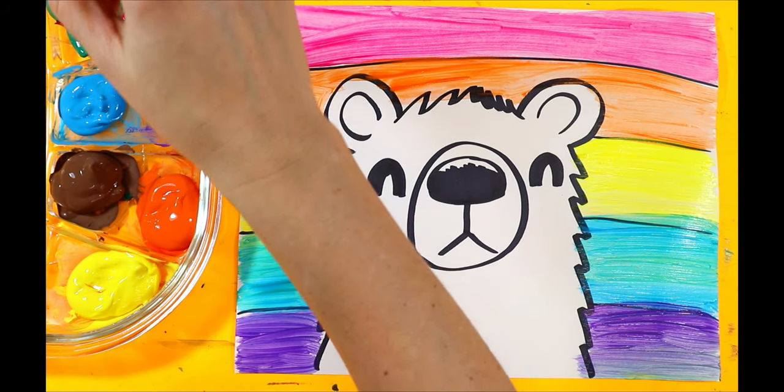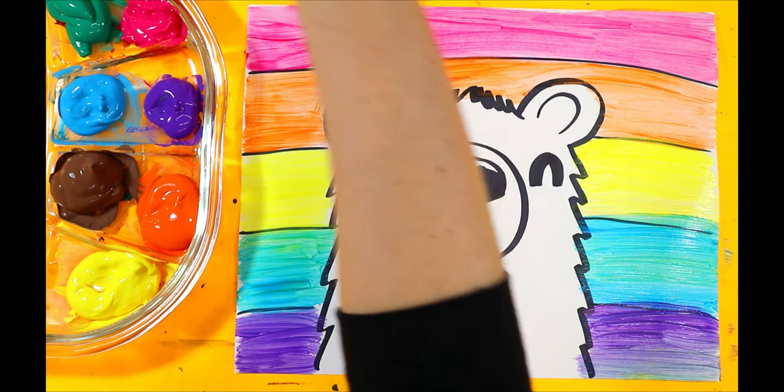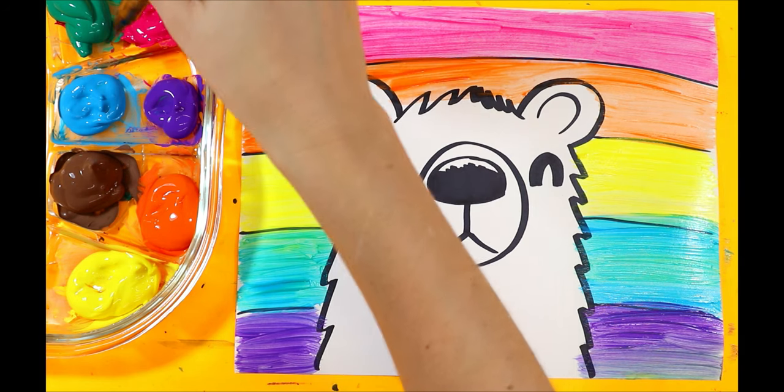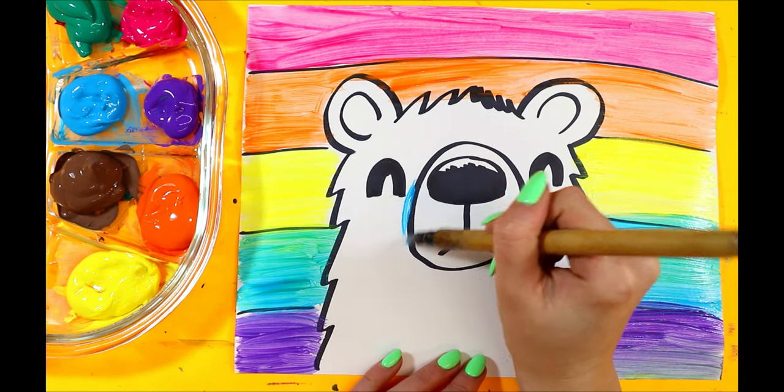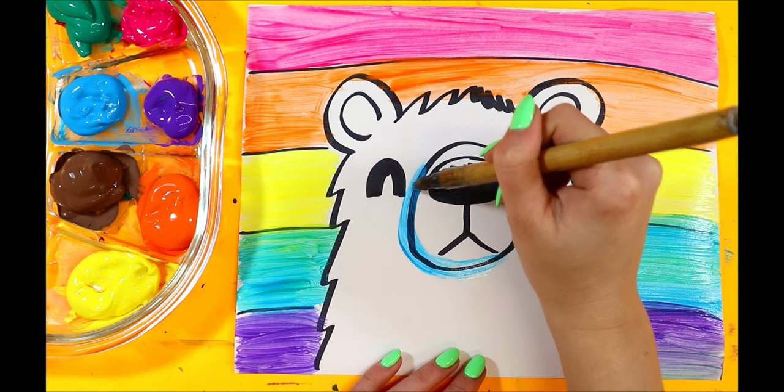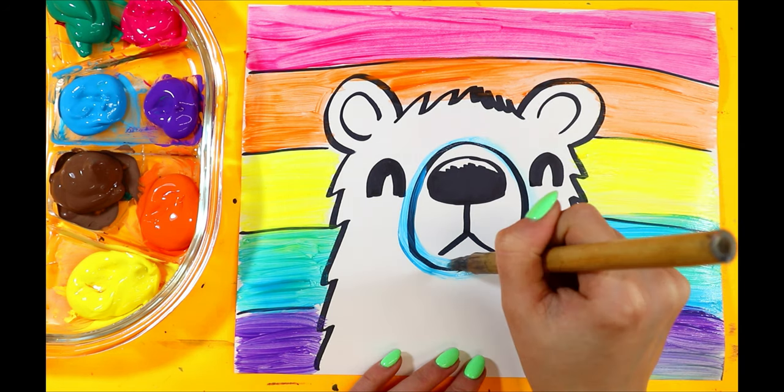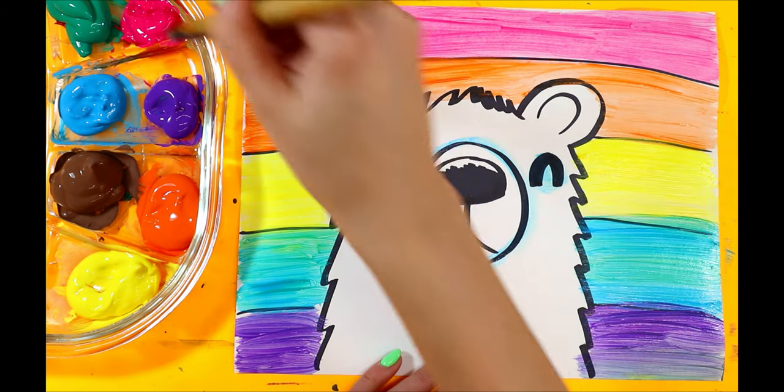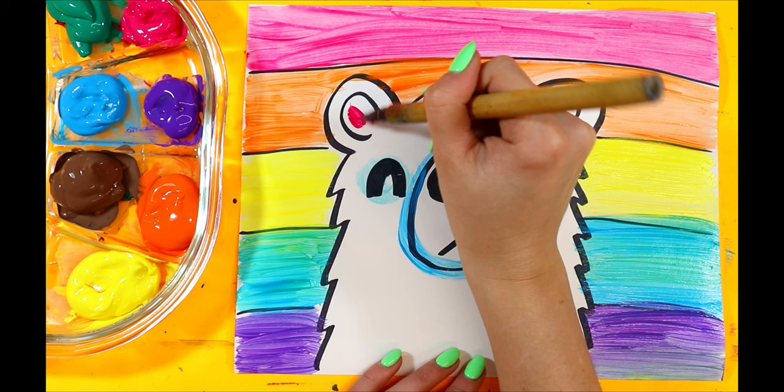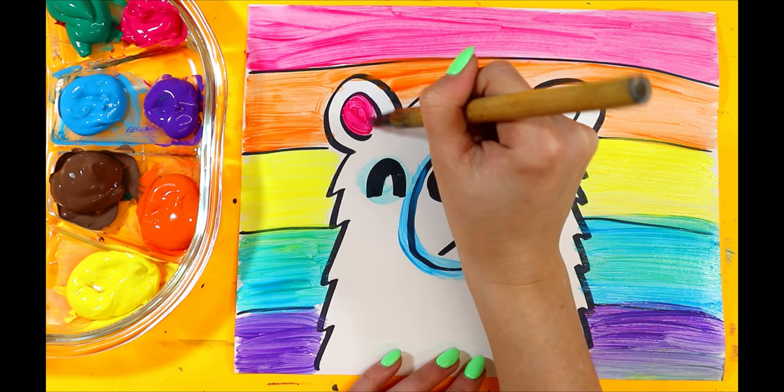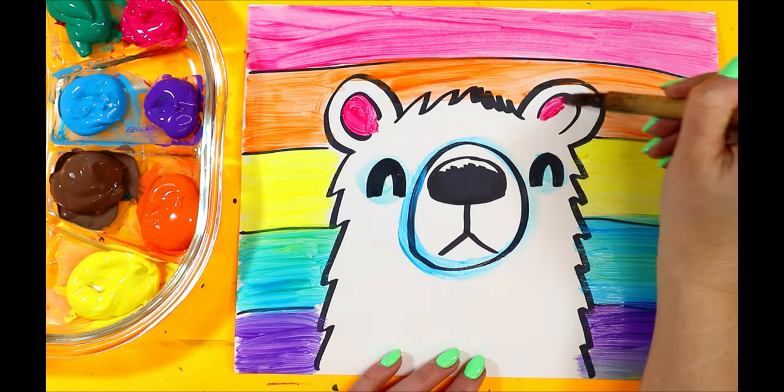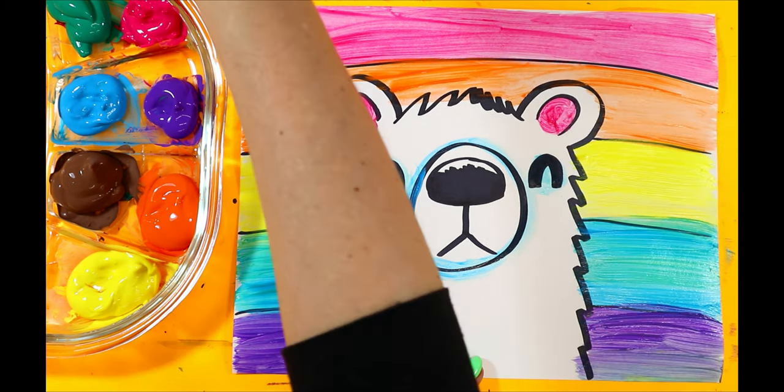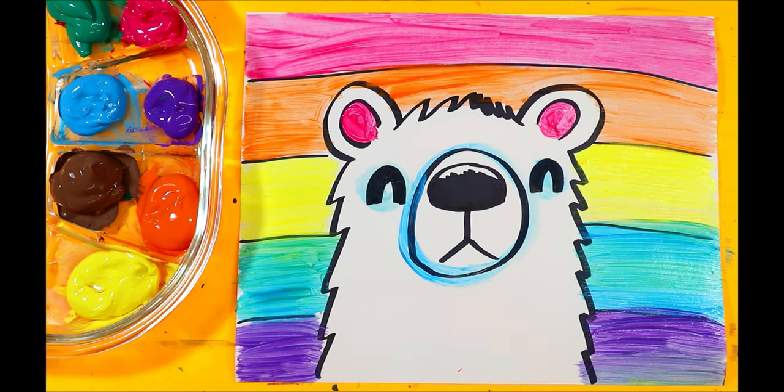And then we're going to shade in our bear. I'm just going to get a little bit of blue. I'm going to shade around the snout and the eyes. And I'm going to get some pink for the ears. And just like that, Polar Bear is done.